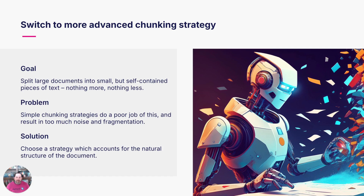Typically they will try to split documents every thousand tokens, perhaps allowing for some overlap — another 20 tokens between chunks. This results in too much noise and too much fragmentation, and it's going to make it difficult for the model to generate a correct answer.